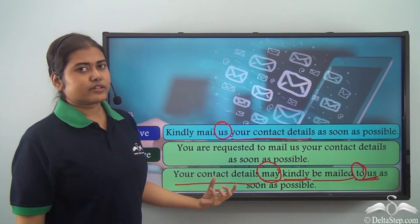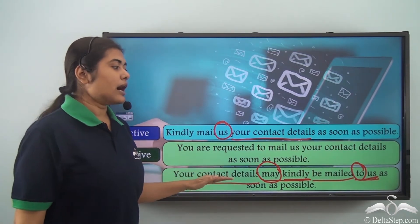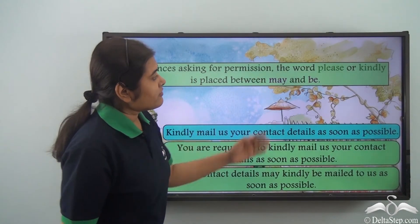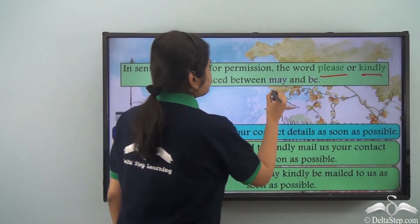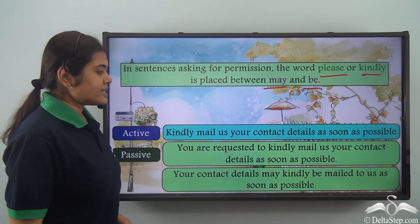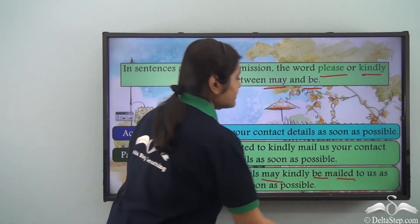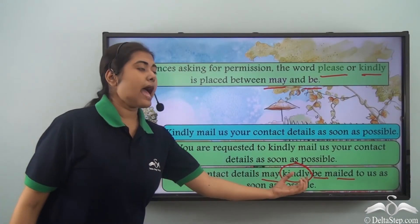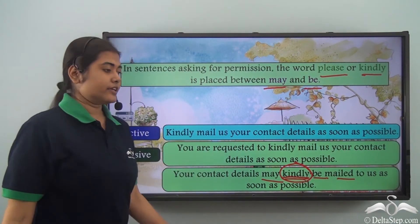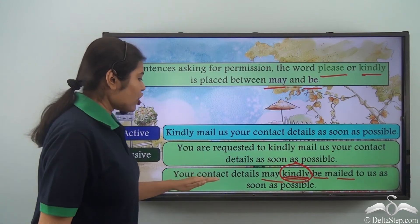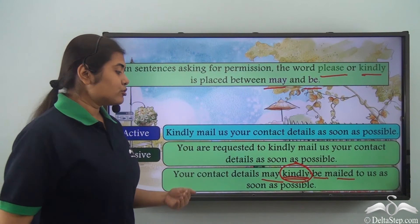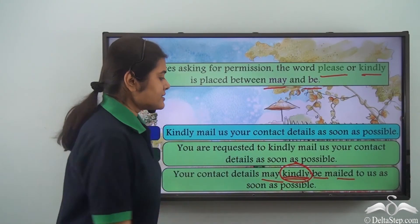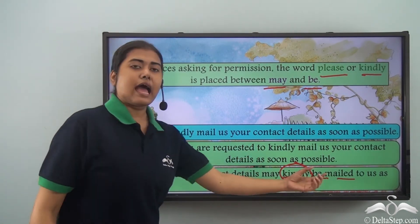This may be slightly difficult to grasp, but notice that in sentences asking for permission or making a polite request, the word 'please' or 'kindly' is placed between 'may' and 'be.' The verb is actually 'may be mailed', but the word 'kindly' is inserted between 'may' and 'be.' We could not write it as 'your contact details kindly may be mailed to us', so the only correct way is to put 'kindly' between 'may' and 'be.'